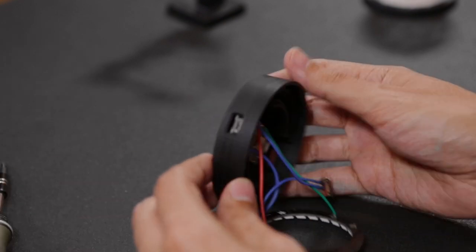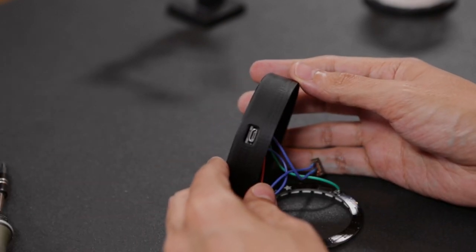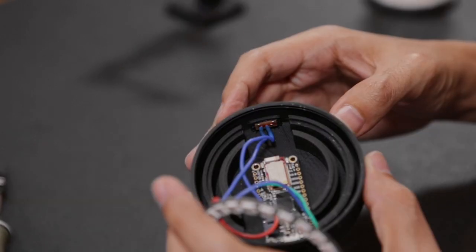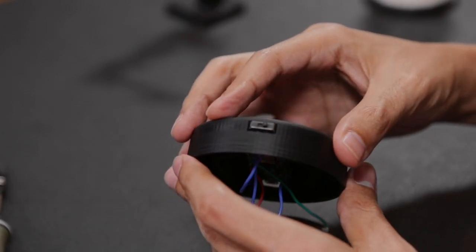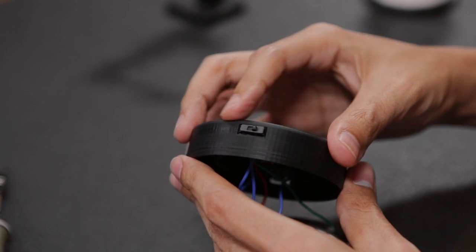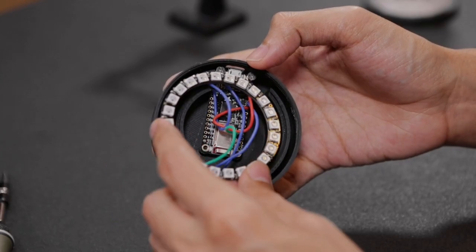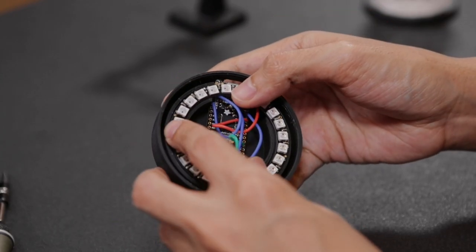The cutout in the case allows you to recharge the LiPo battery and upload code through the micro USB port. You can install the slide switch by inserting it into the cutout on the opposite end of the USB port. The NeoPixel ring sits on top of the circular mount and it just press fits into place.